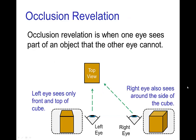Another effect that comes from stereoscopic vision is that one eye may see a different part of an object than the other eye. In this example, the left eye only sees the front and the top of the cube, while the right eye sees those two sides and around to another side of the cube. So with those two different views, the brain can judge distance and depth.